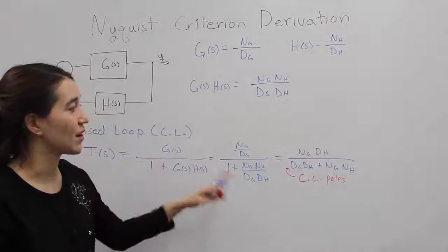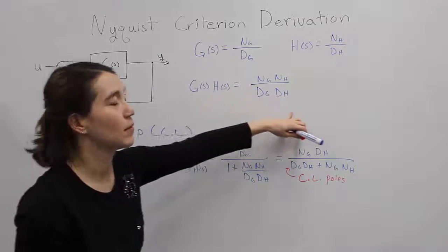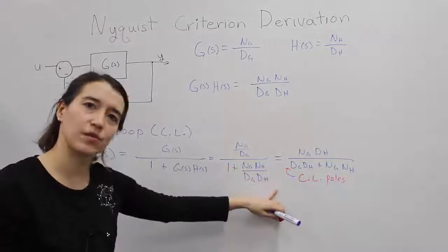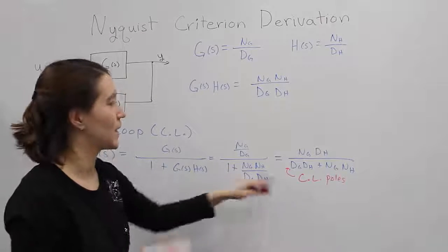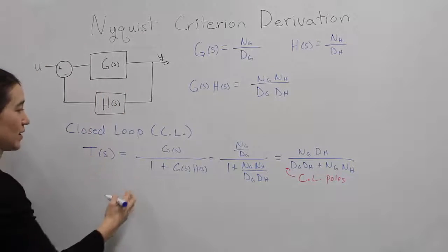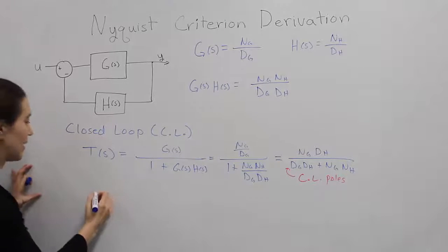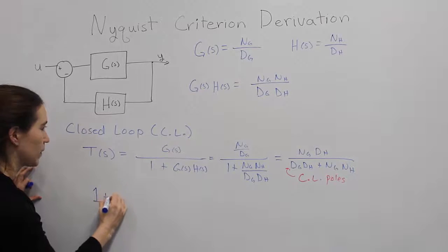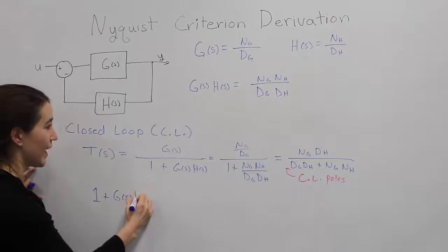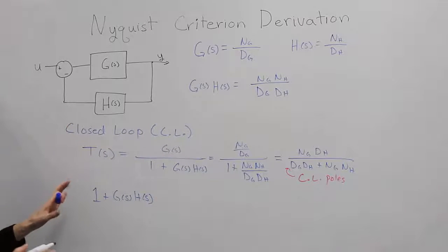What we'd like to do is find an equation that directly relates our open-loop poles or zeros to our closed-loop poles or zeros. Somebody figured out that if we look at this equation, it's going to be the same as this denominator. If we just take this equation by itself, 1 plus G of s, H of s, let's just multiply this out.